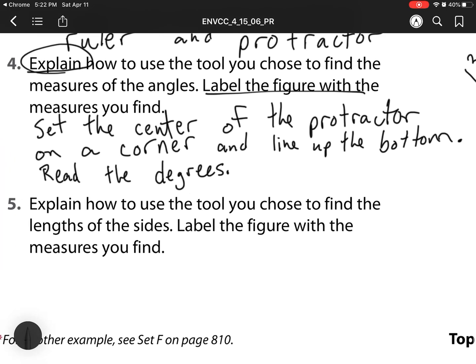So number five, explain how you use the tool you chose to find the lengths of the sides. We already did that labeling. So again, we're focusing on explaining how we use a ruler, which seems pretty easy, but we have to make sure we're answering that question. Remember, with a ruler, we set the point zero.